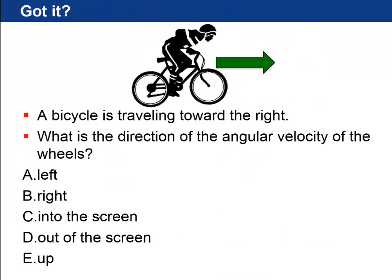So let's see if you've got it. If a bicycle is traveling towards the right, what is the direction of the angular velocity of the wheels here? Take a look at the choices, press pause in the video, try your right-hand rule, and then I'll tell you if you got it right or not.